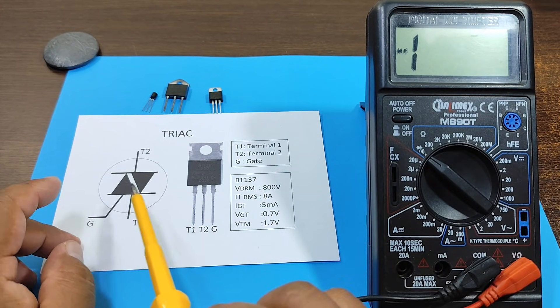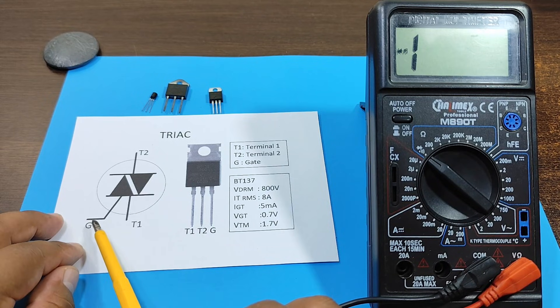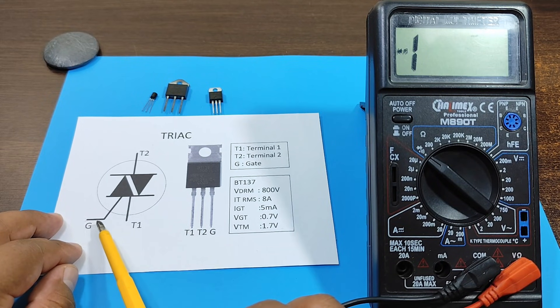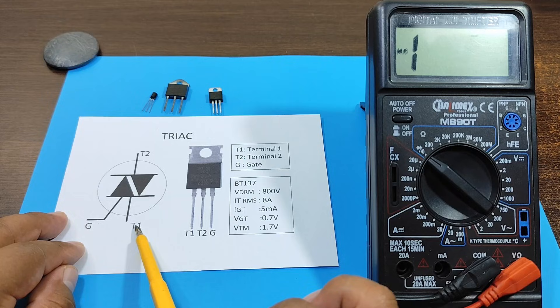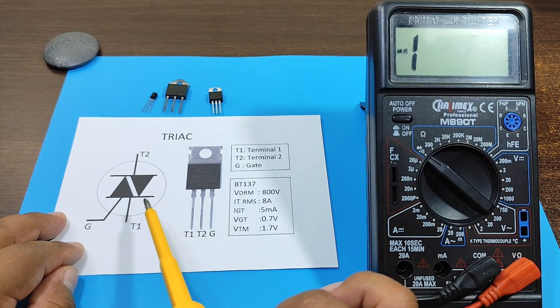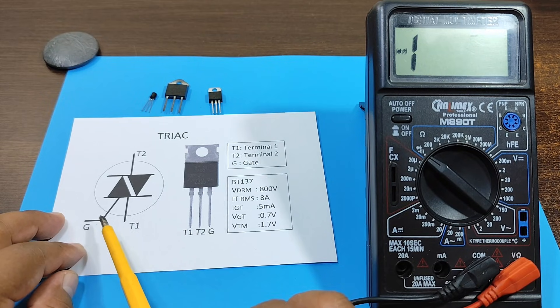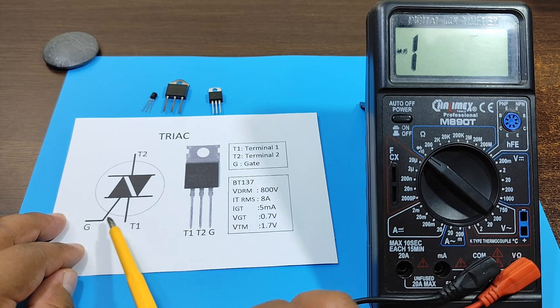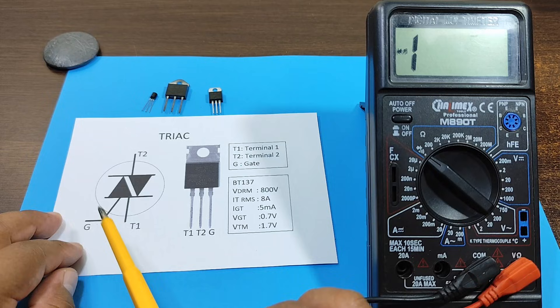Now, to take the measurements, we'll use the symbol. In the case of the gate with respect to T1, we have to obtain a measurement on the multimeter. It doesn't matter if I put positive here and negative here, or vice versa.